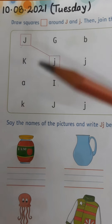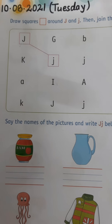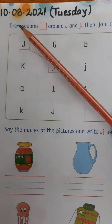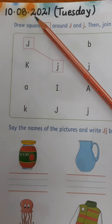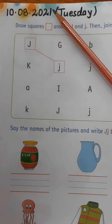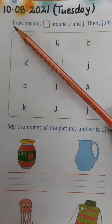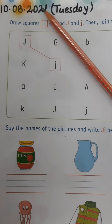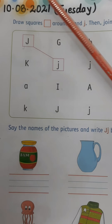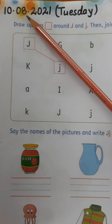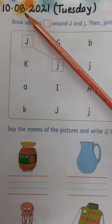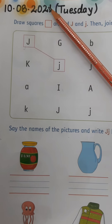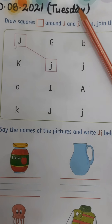Good morning dear children. How are you today? Today is Tuesday and the date is 10th of August 2021. So 10th is the date, 8th is the month and 2021 is the year. 8th means August month. So which month is going on? August, year is 2021. So spell after me.